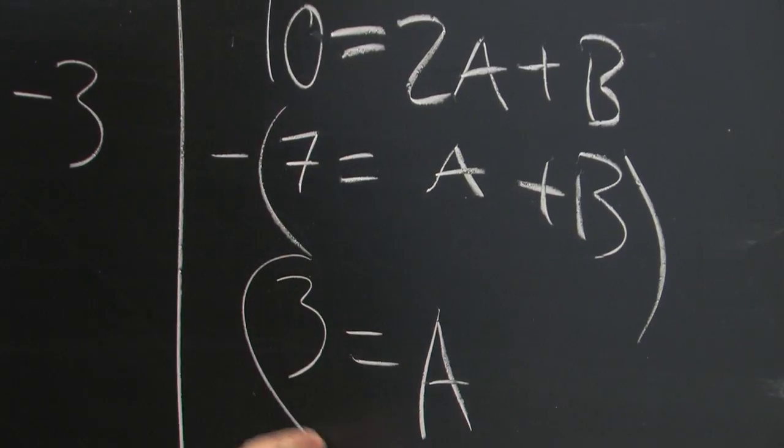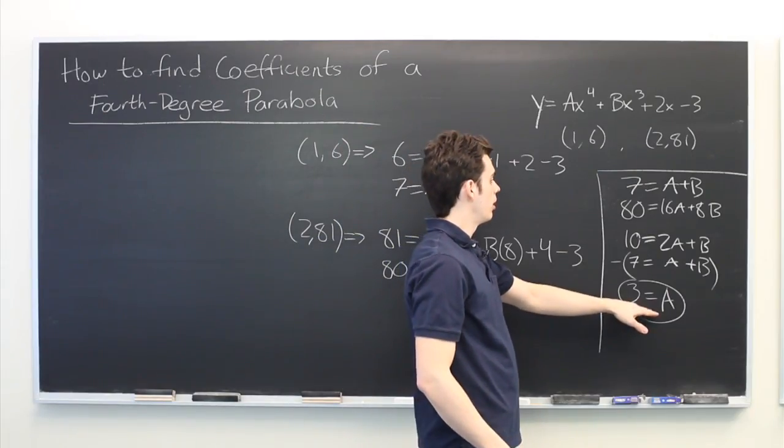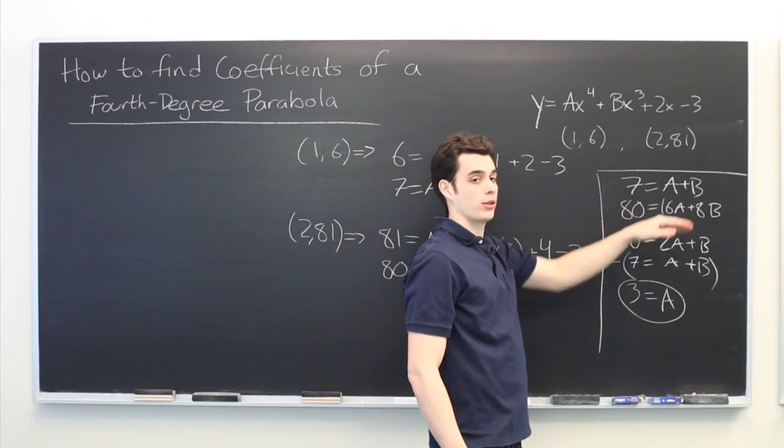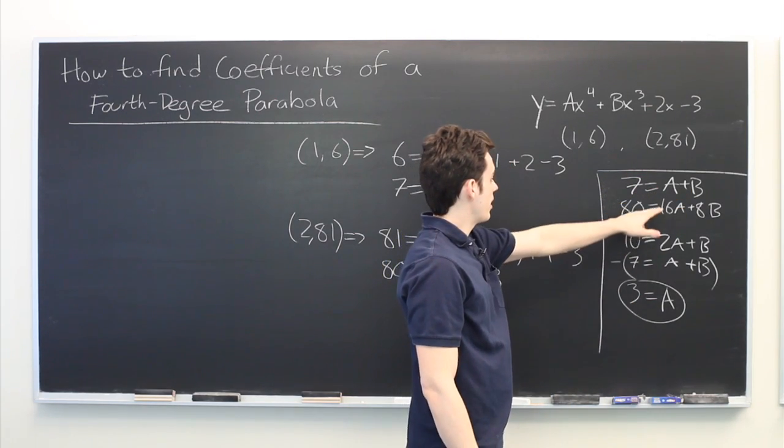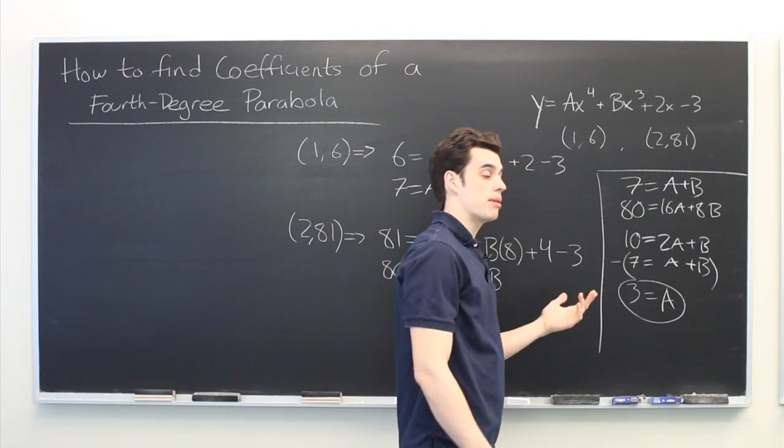So here we know that a is equal to three. And we can quickly take this value, plug it into any of our equations, and it should be able to tell us what b is equal to. And here we find that if this is three, seven equals three plus b, b must be four.